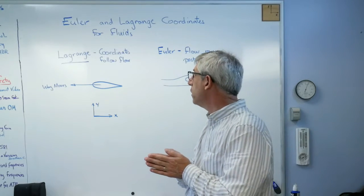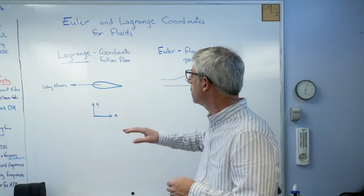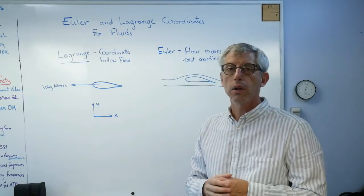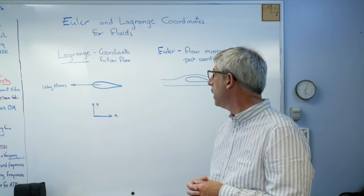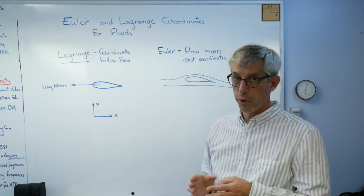And there's really only two ways to draw a coordinate system most of the time. One is called Lagrangian and one is called Eulerian. Lagrangian coordinate system is where the coordinate system is fixed to the fluid.